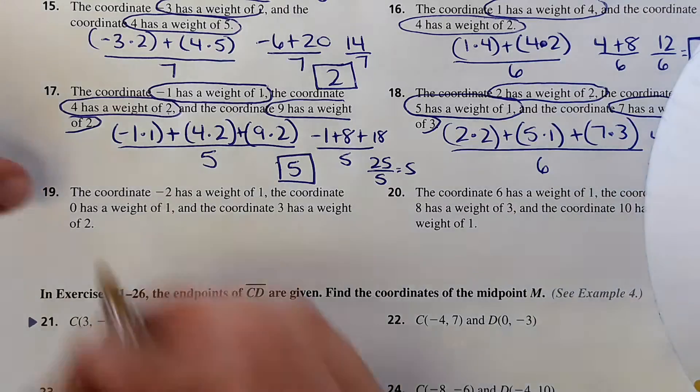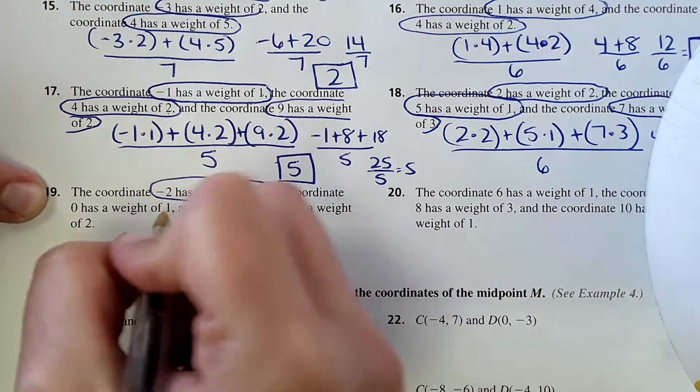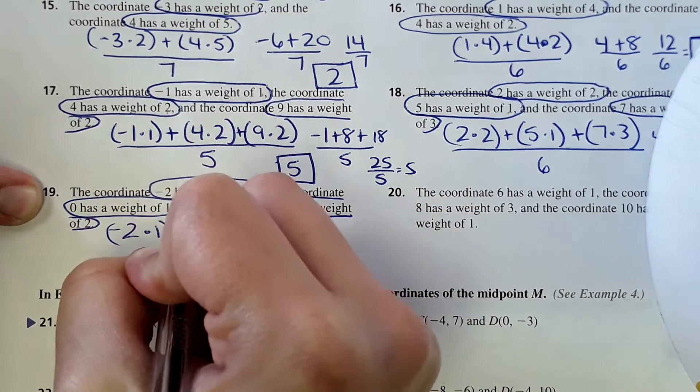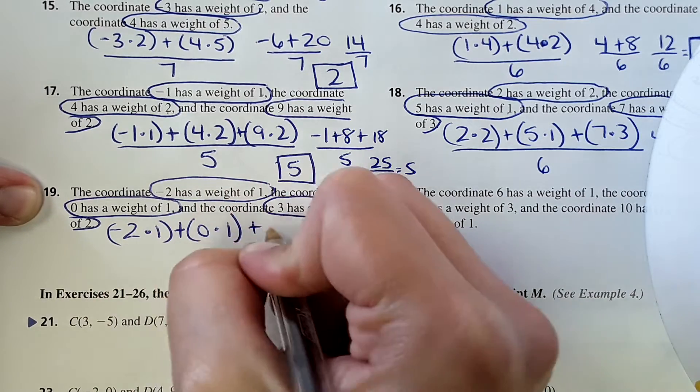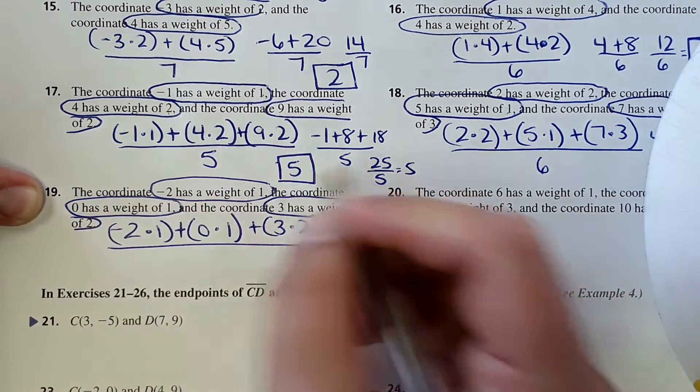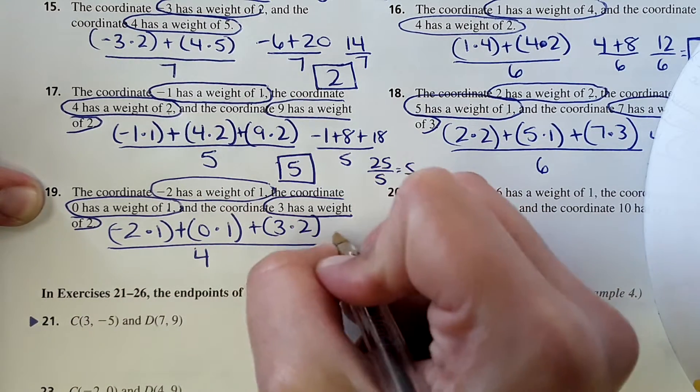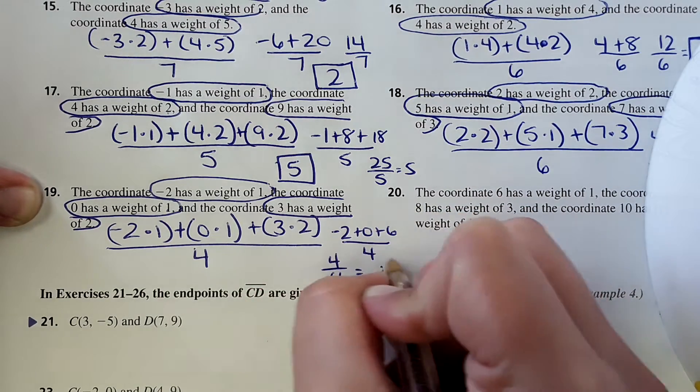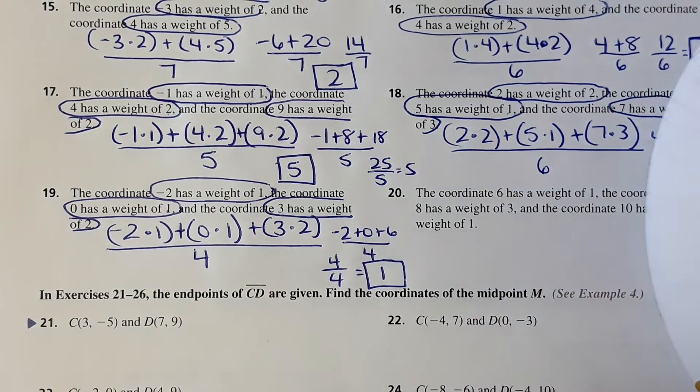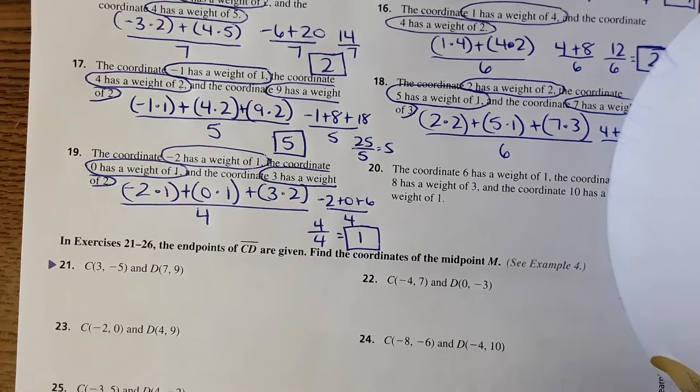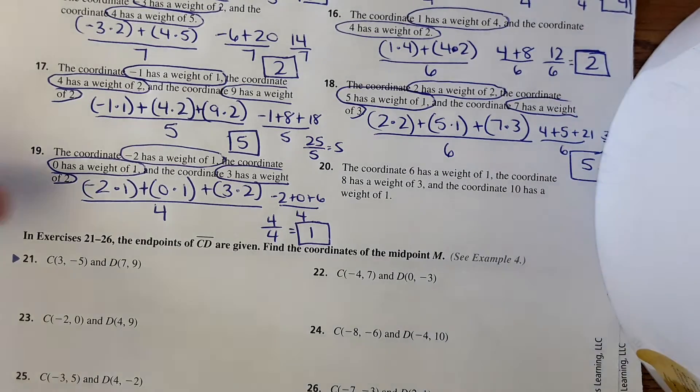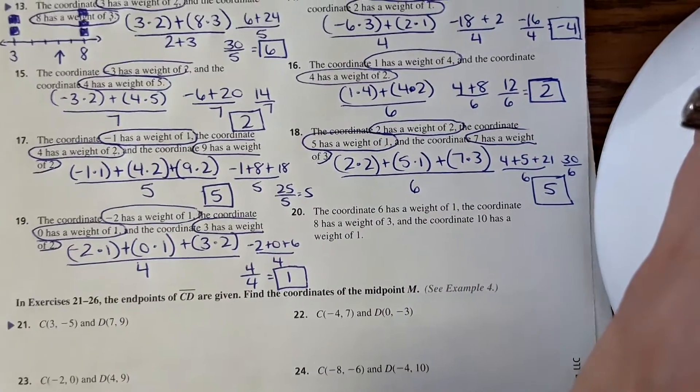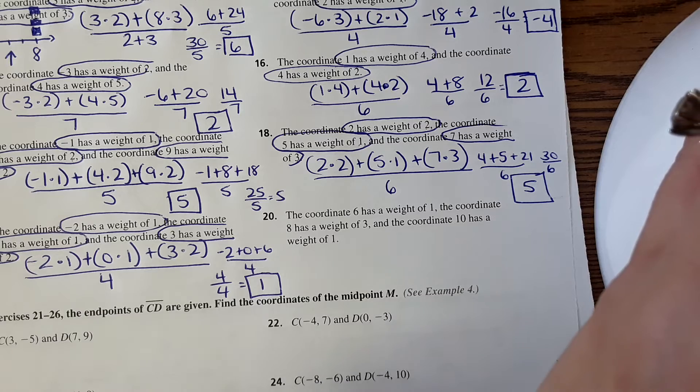If you're working ahead, good for you. So I'm just going to continue working on 19. So negative 2 times 1 plus 0 times 1. Did anyone finish number 20 already? You're awesome. Did you get 8? Yep. You're awesome.